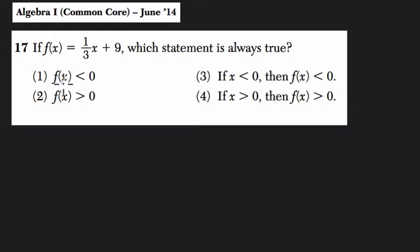Is the output f(x) always less than 0 for any input? Is the output f(x) always greater than 0 for any input x? And then there are other scenarios. If x is less than 0, so if the numbers we're plugging into x here are less than 0, then f(x), the output, is less than 0. Is that always true? And then if x is greater than 0, so if the numbers we're plugging into x are greater than 0, then f(x) is also greater than 0. Which of these are always true?